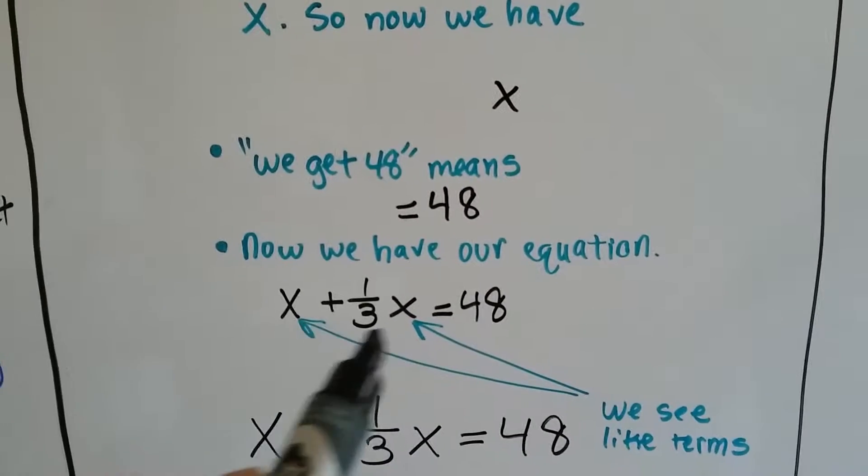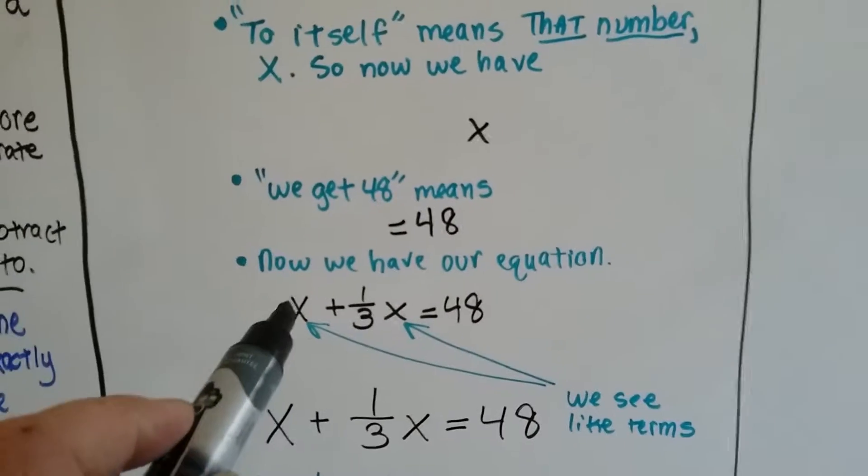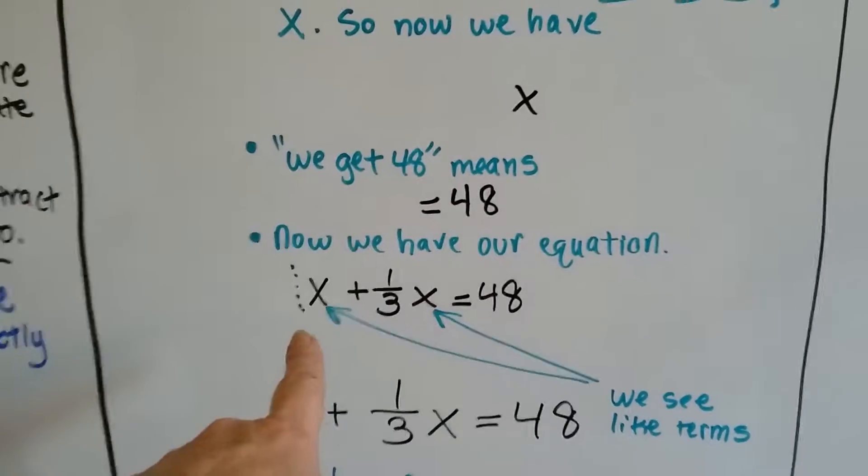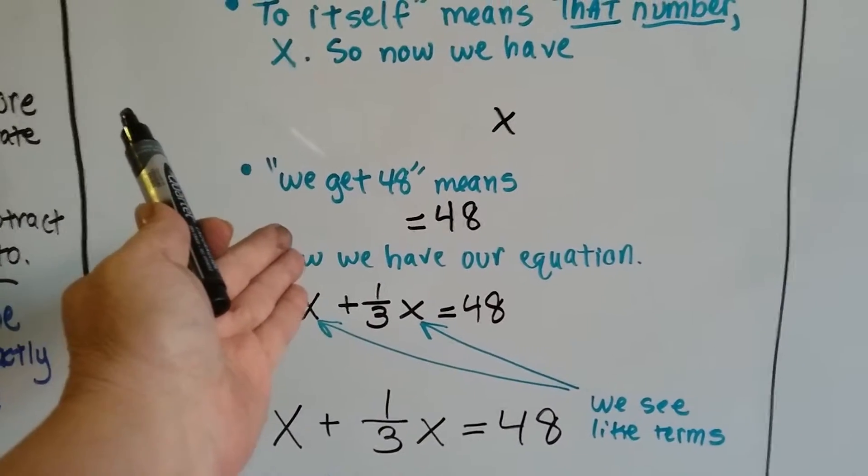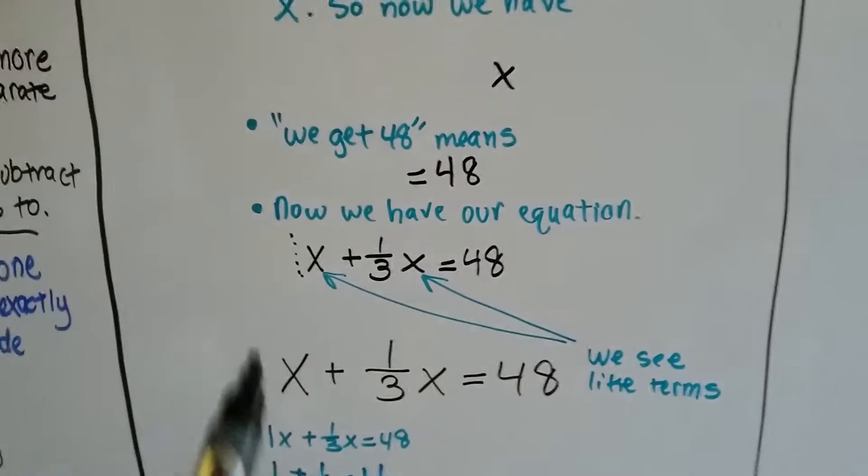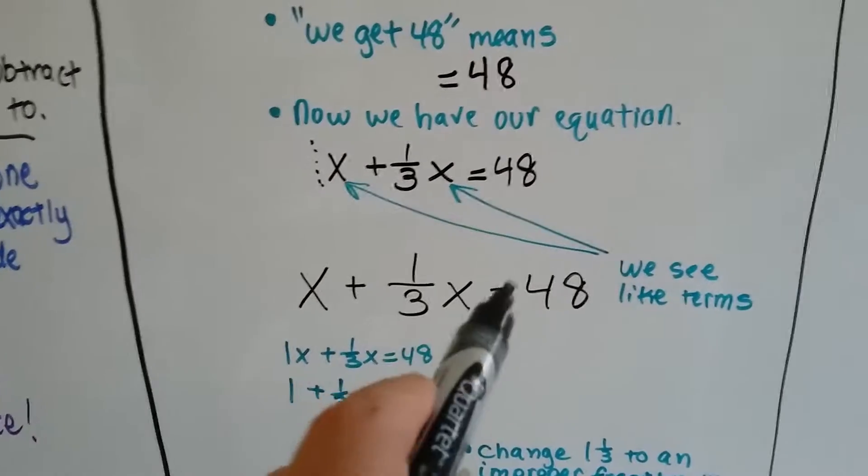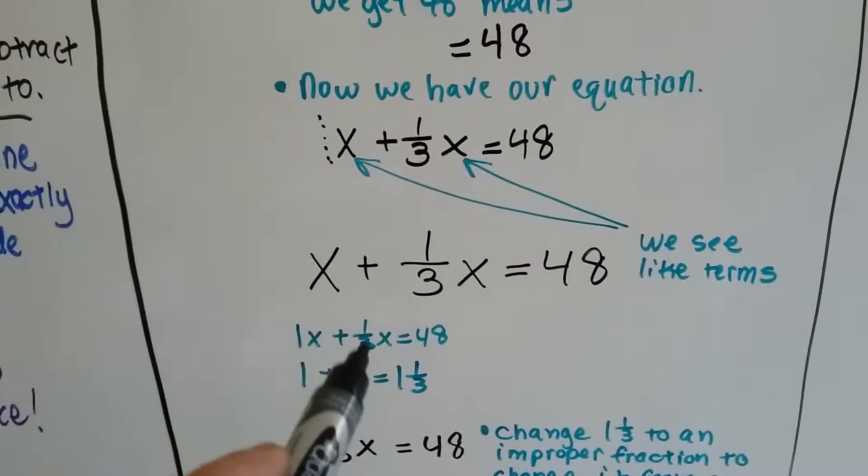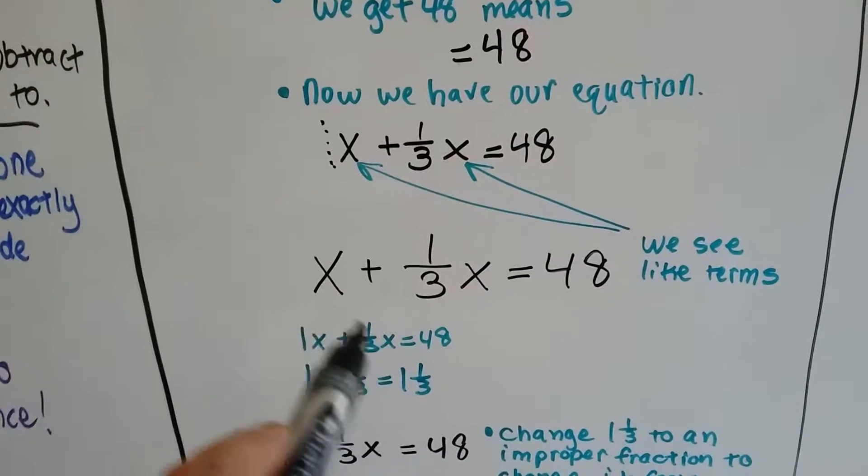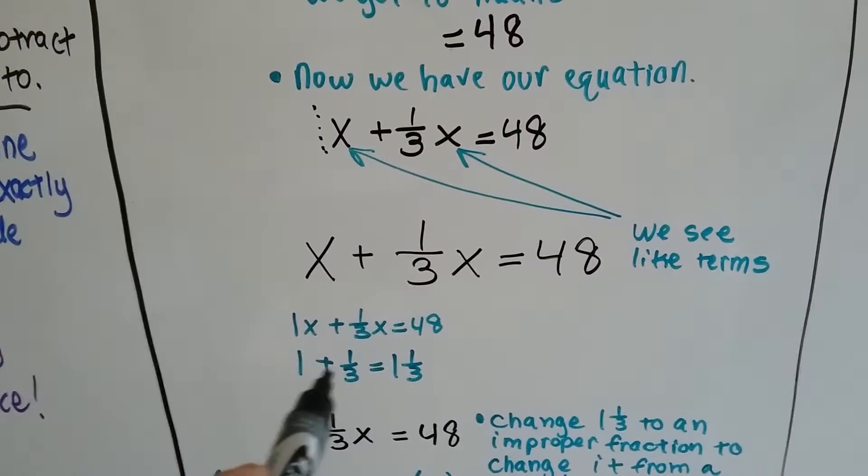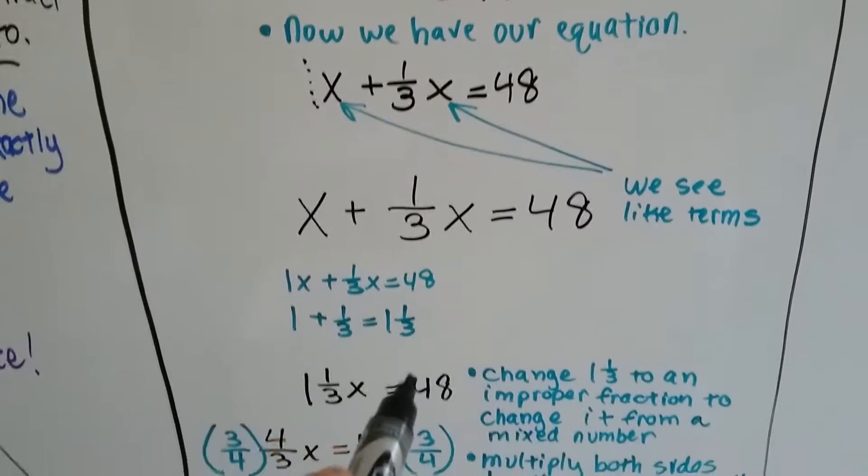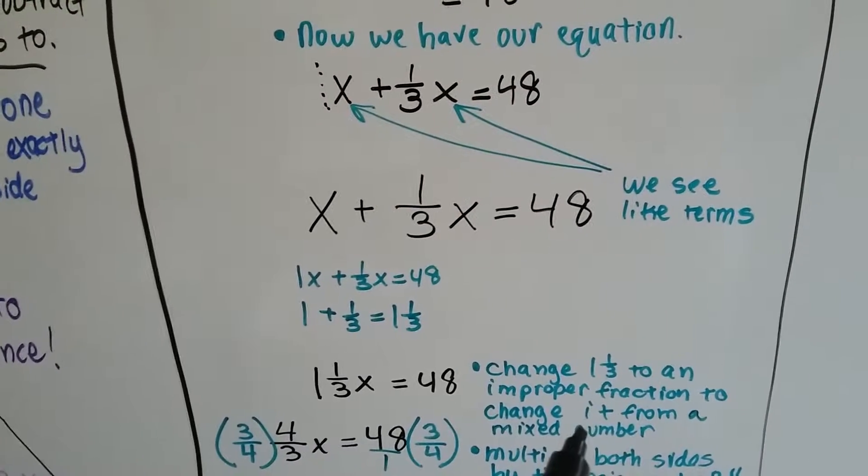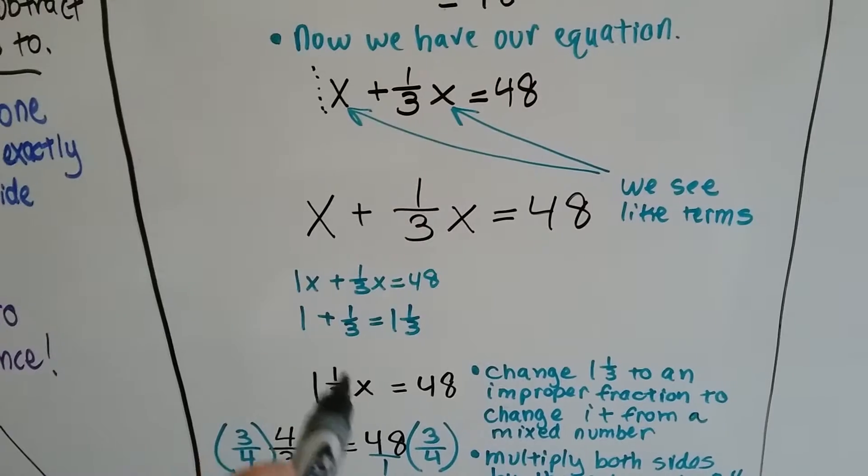We see like terms, don't we? There's an x here and an x there. Remember, when there's a stand-alone variable, there is an invisible one in front of it. We just don't write it because we can see there's one x. So we have x plus one-third x equals 48. That means we have one x plus one-third x. We need to add the one and the one-third. One plus one-third is one and one-third. So now we have one and one-third x equals 48.